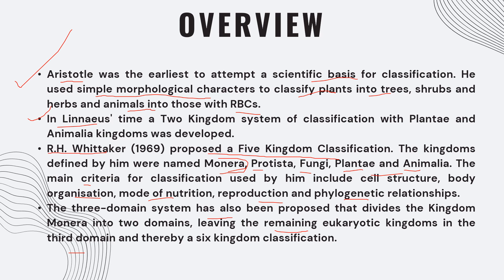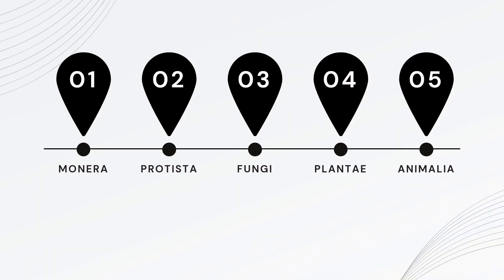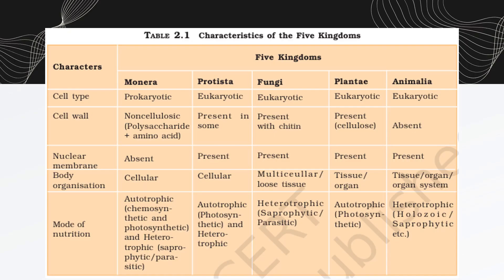We now have the five-kingdom classification: Monera, Protista, Fungi, Plantae, and Animalia. There is an important table given in your NCERT that you must read and remember covering all five kingdoms.